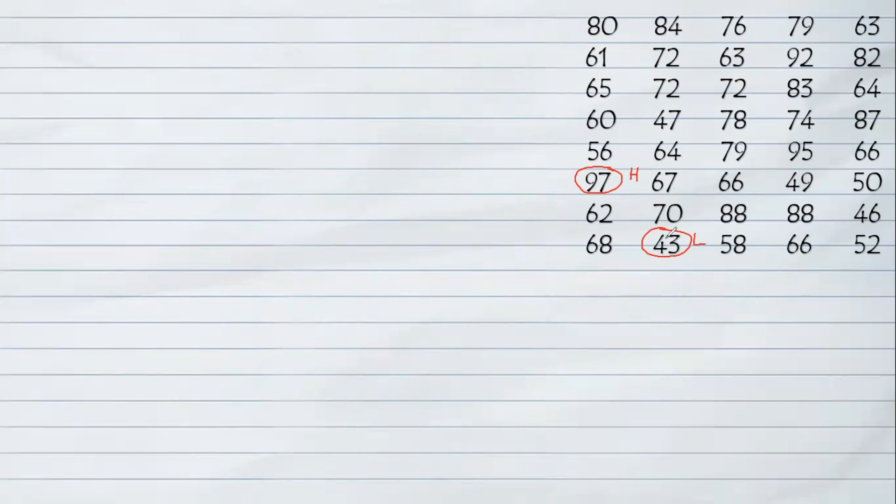If you already identified the highest and lowest, we can proceed to the next step, which is computing the range. How to compute the range? All you need to do is identify the highest and lowest and subtract them. Based on the given, and we did that one earlier, highest value there is 97 and the lowest value is 43.